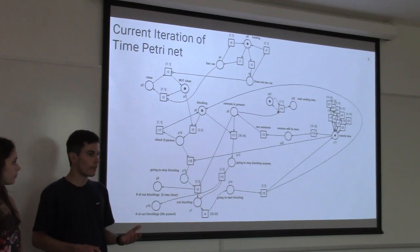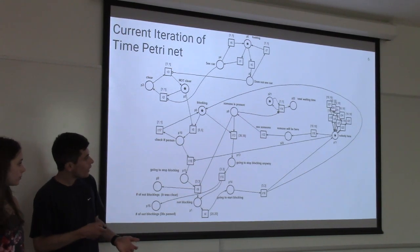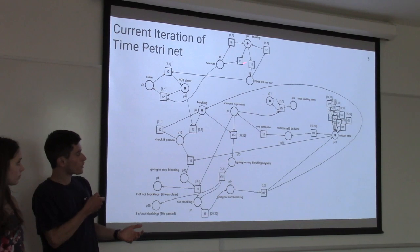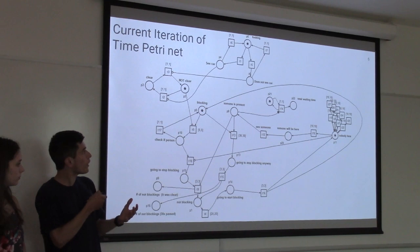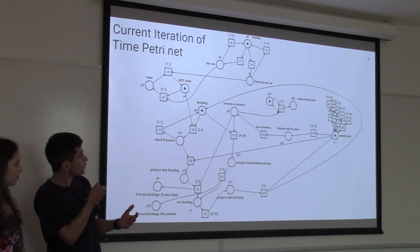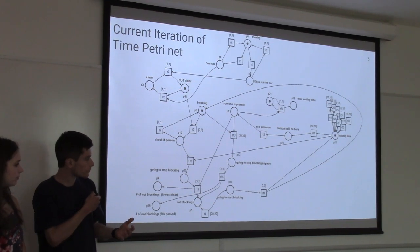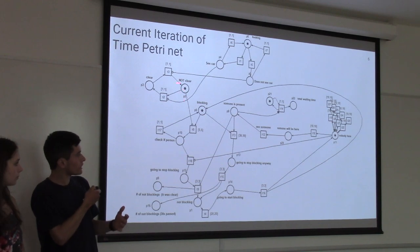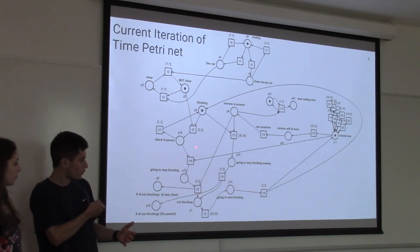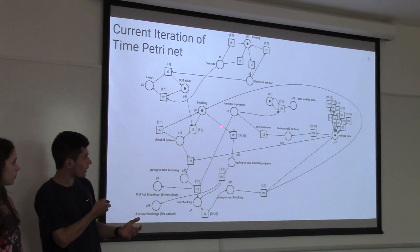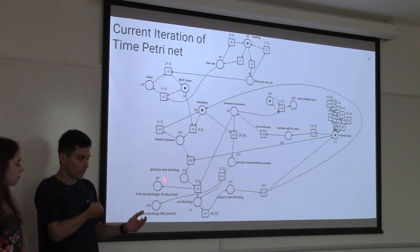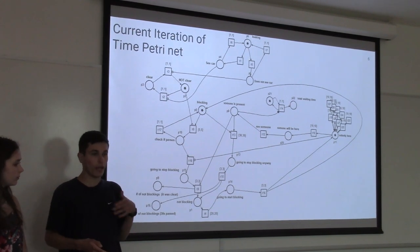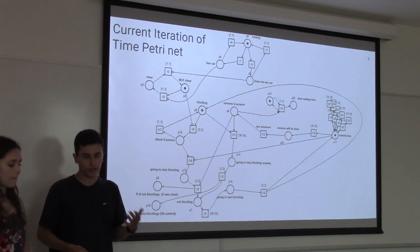Here is the current iteration of the time Petri Net for this system. There are several sections: the top section is the watcher, which consists of it looking at the road, seeing a car, and sending the corresponding message through one of two arcs. The guard then receives that message and decides to let the person cross or not. If someone is there, it keeps track of how many people have crossed and how long they have waited, then resets the entire system and repeats until it is stopped.